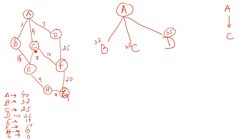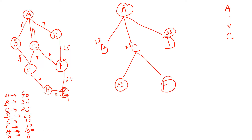From C we have two different routes: to E and to F. The heuristic cost of E is 19 and F is 17. Which is lower? 17 is lower, so F is lower. Now we expand F.